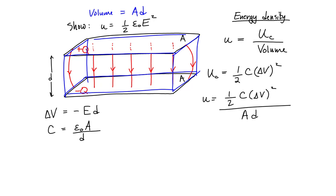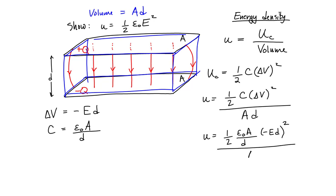We now have enough to determine the expression for energy density of our electric field. The energy density has in the numerator: one-half times the capacitance, which is epsilon-naught times A over the separation distance d, times the potential difference — which is minus E times d — that quantity squared. This is all divided by A times d.